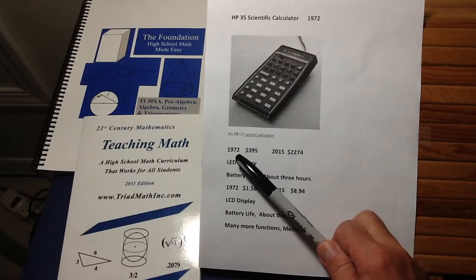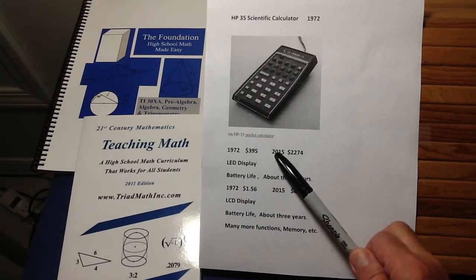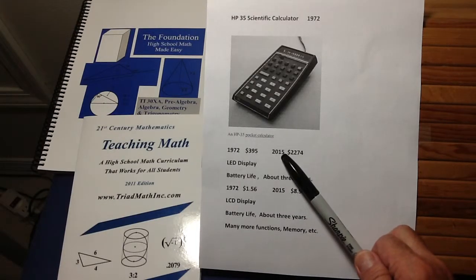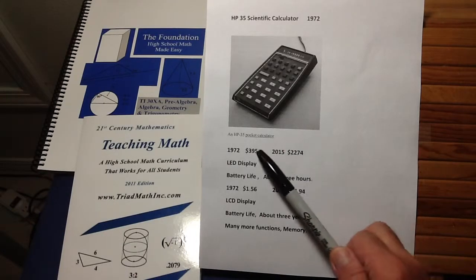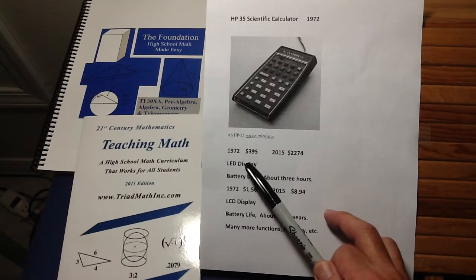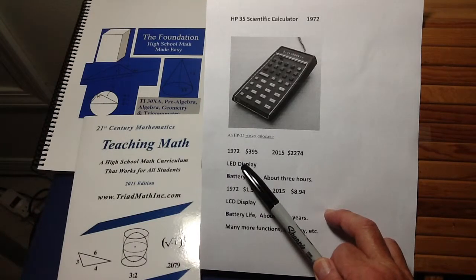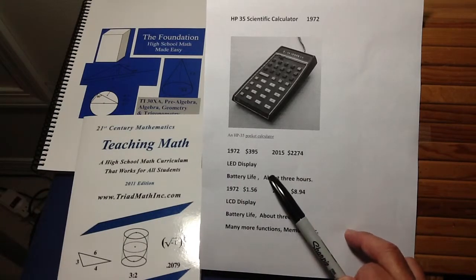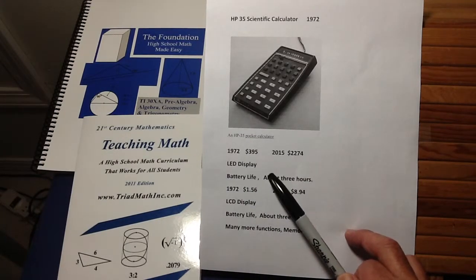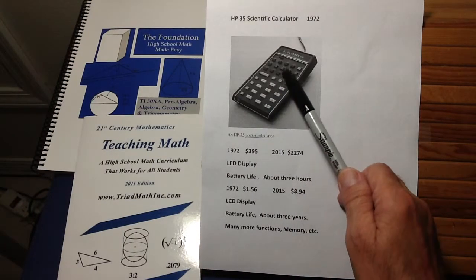In 1972, this calculator sold for $395. Now, in today's dollars, 2015, that would be $2,274. So it was quite expensive. It had a light emitting diode called LED display. And they were very, very primitive then and consumed a lot of power. So the battery life was only about three hours, and then you had to recharge it. It used rechargeable batteries, of course, to do that. And it was also pretty hard to use.